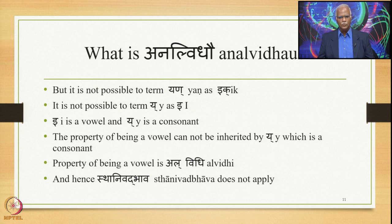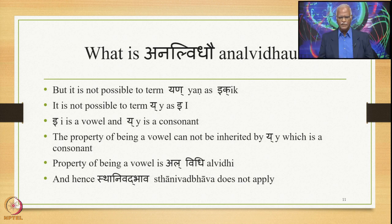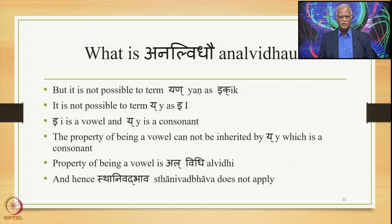What is Analvidhav? It states that it is not possible to term Yer as Ik or as E. E is a vowel and Yer is a consonant — a direct conflict that is not allowed. The property of being a vowel is based on the individual property of an individual sound; it is an Alvidhi, and hence Sthanivadbhava does not apply. That is the overall impact of Analvidhav: Sthanivadbhava does not apply in case of an Alvidhi, though except for Alvidhi, Sthanivadbhava can apply.